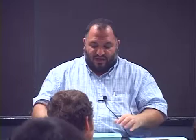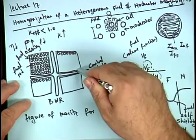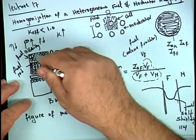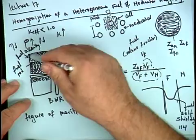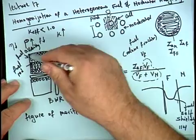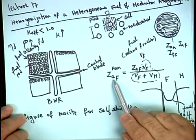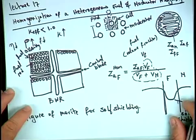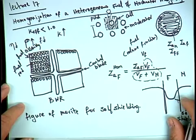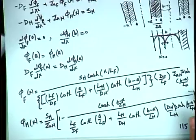Last time I told you that we can do homogenization by averaging over the volume. But if asked in an exam why simple volume averaging is not appropriate for homogenization, you say: it does not take into account spatial self-shielding. So we must do something different.